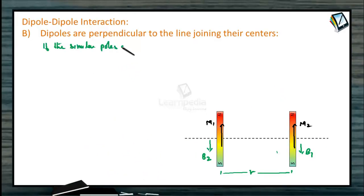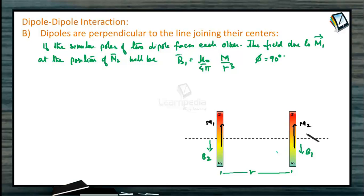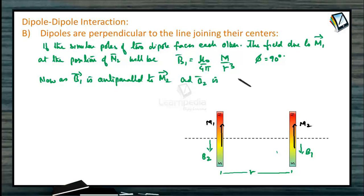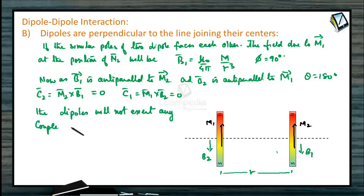If the similar poles of the two dipoles face each other, the field due to M1 vector at the position of M2 vector will be B1 vector = mu naught by 4 pi times M1 by R cubed, with phase angle 90 degrees. B1 is anti-parallel to M2, and B2 is anti-parallel to M1, so theta = 180 degrees. Couple C2 = M2 cross B1 = 0. Similarly, couple C1 = M1 cross B2 = 0. The dipoles will not exert any couple on each other.